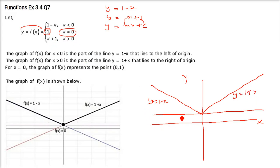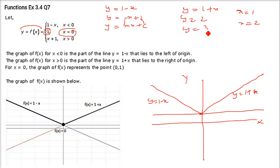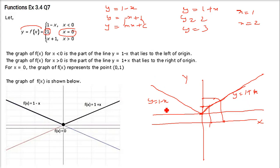For x > 0, to plot y = 1 + x: put x = 1, y = 2; put x = 2, y = 3. So mark points (1, 2) and (2, 3) and draw the line. Similarly for y = 1 − x on the left side. And for x = 0, f(x) = 1. This is how you make the graph for this piecewise function. At certain points, f(x) will be equal to 0.